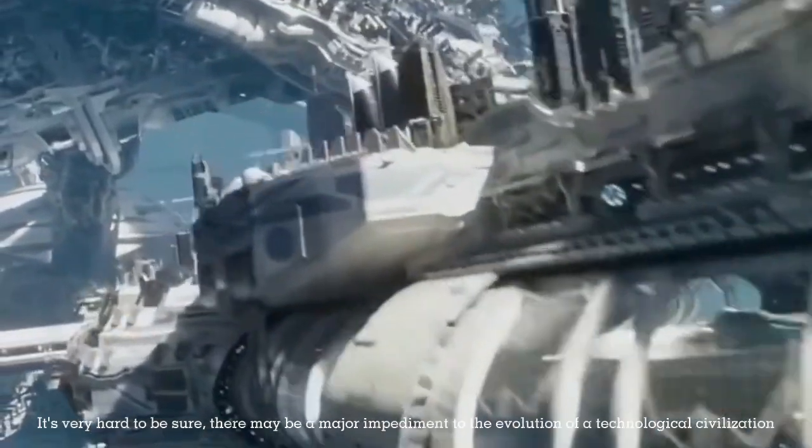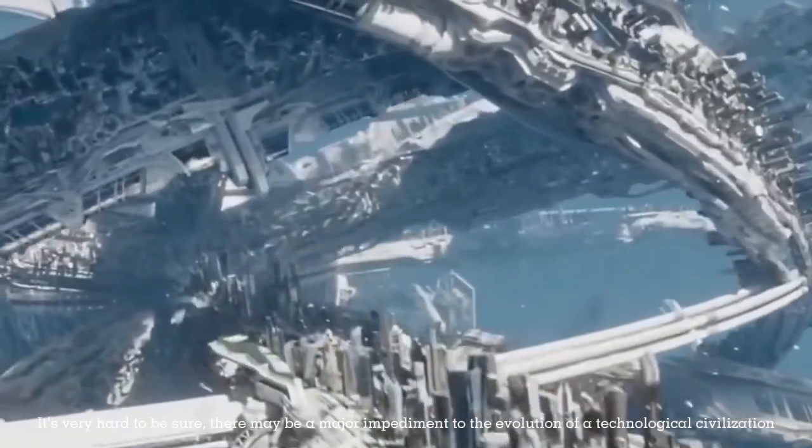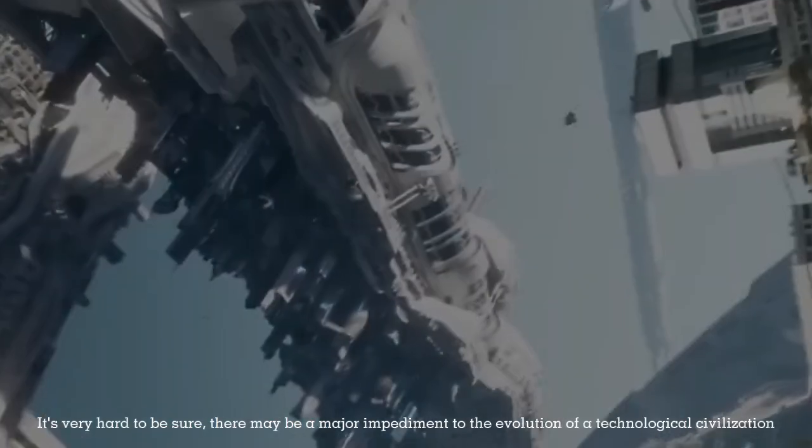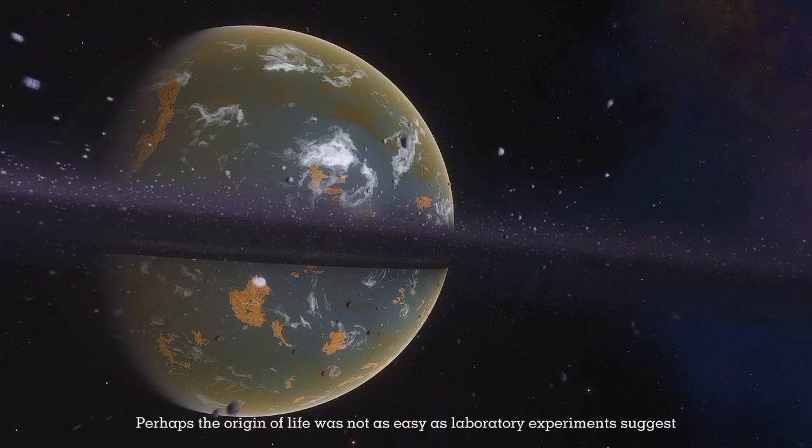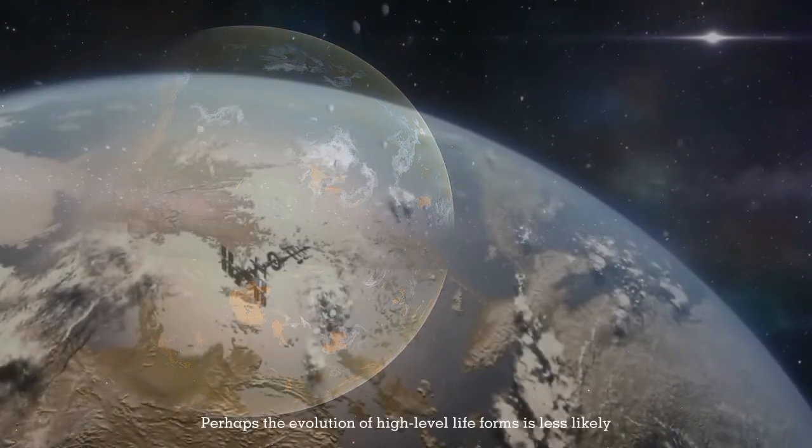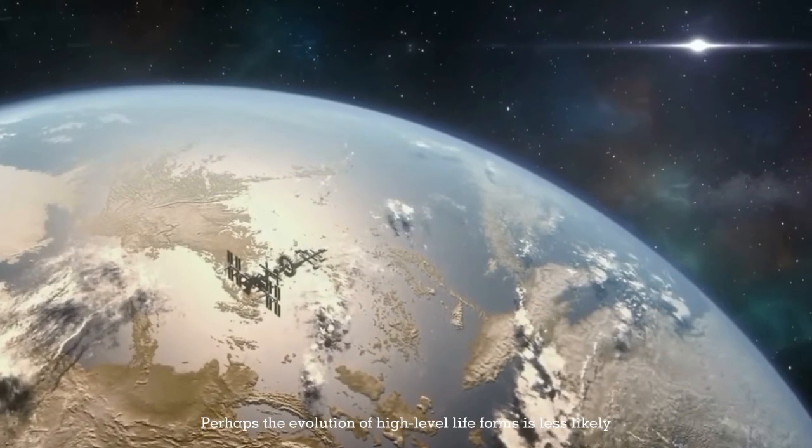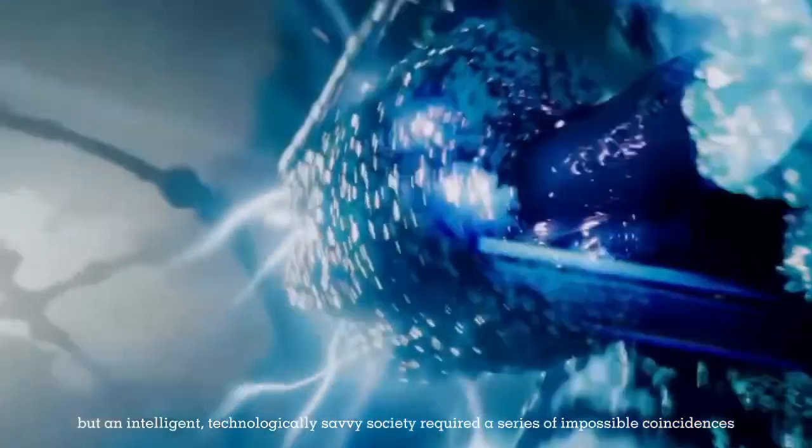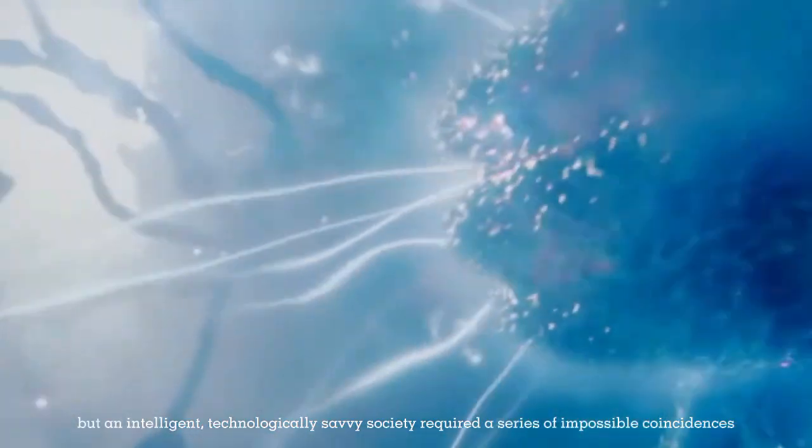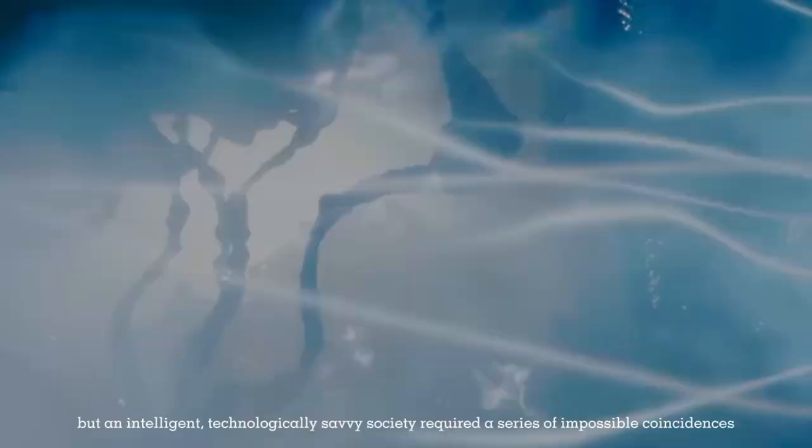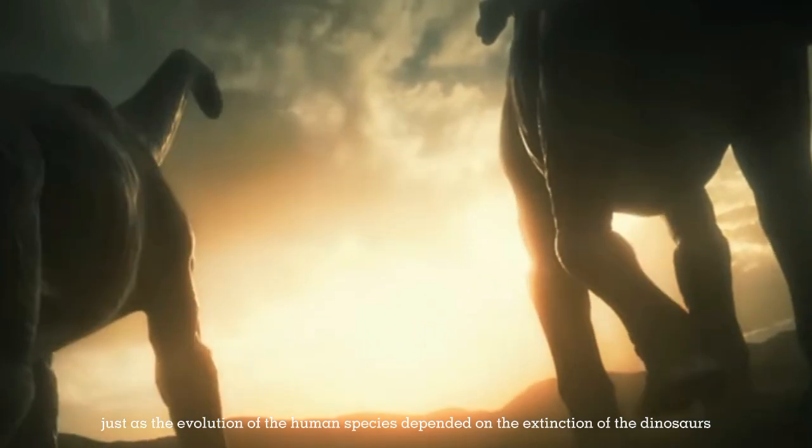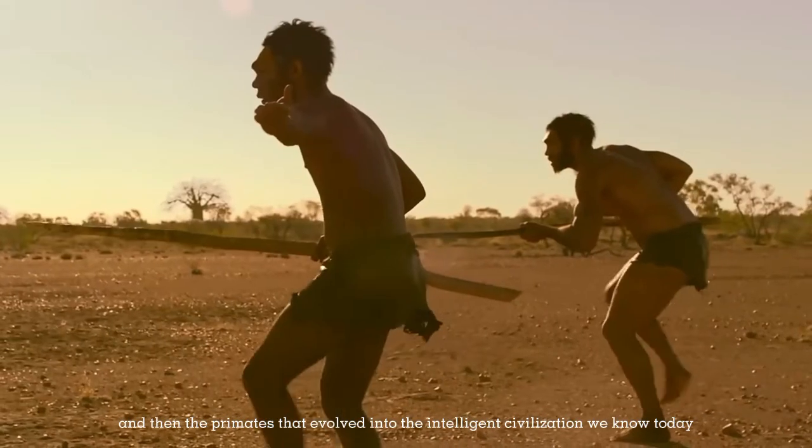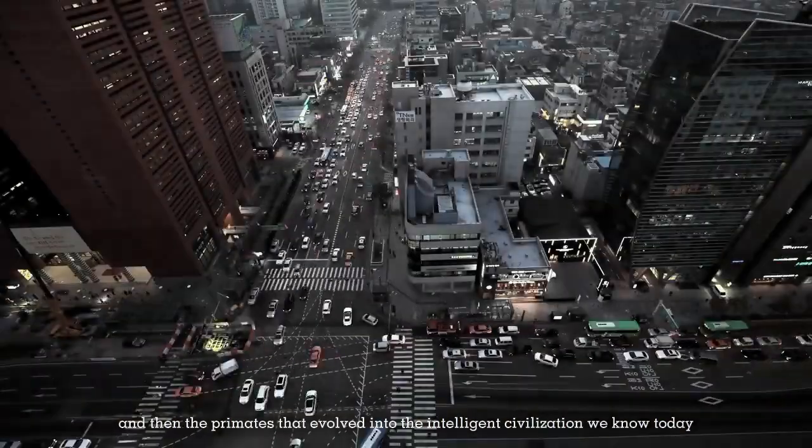It's very hard to be sure. There may be a major impediment to the evolution of a technological civilization. Planets may be rarer than we think. Perhaps the origin of life was not as easy as laboratory experiments suggest. Perhaps the evolution of high-level lifeforms is less likely, or complex lifeforms may have evolved, but an intelligent, technologically savvy society required a series of impossible coincidences, just as the evolution of the human species depended on the extinction of the dinosaurs, and then the primates that evolved into the intelligent civilization we know today.